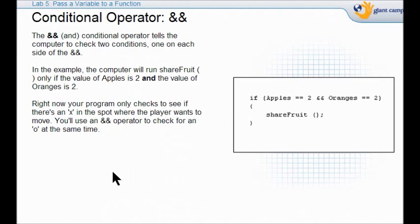Now we're going to look at the conditional operator, the double AND. All this means here is that both these conditions have to be true. If we have two apples and we have two oranges, we will share fruit. Both these conditions have to be met. So that's what this double AND means. That means both conditions. You look at this side and you look at this side. They both must be true.